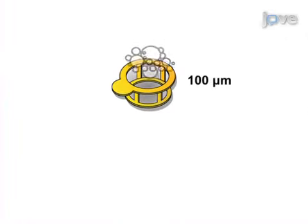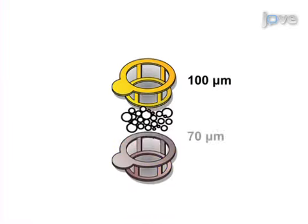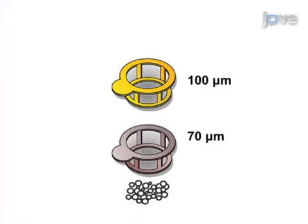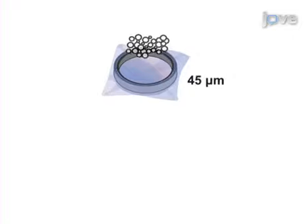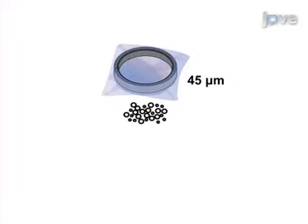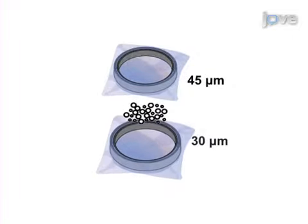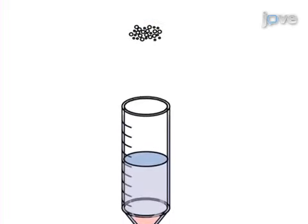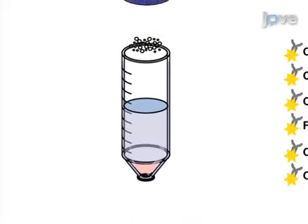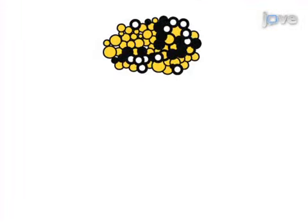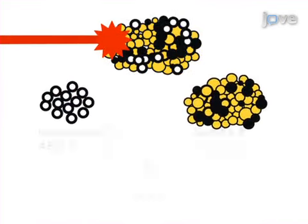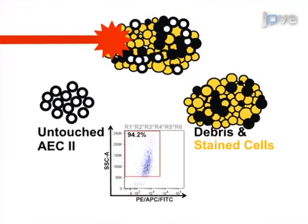The resulting suspension is filtered through a series of membranes of decreasing pore size, then stained, and type 2 alveolar epithelial cells are isolated by flow cytometric negative selection.